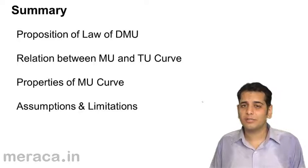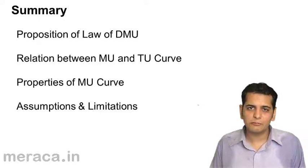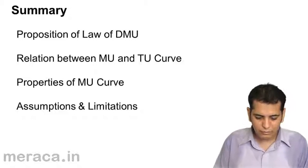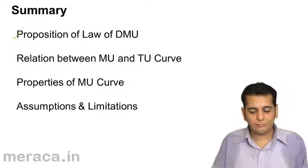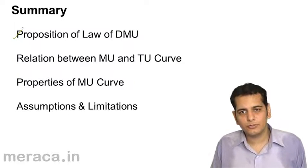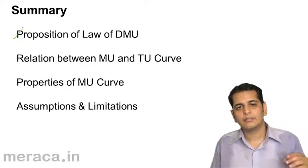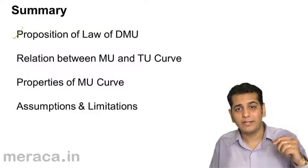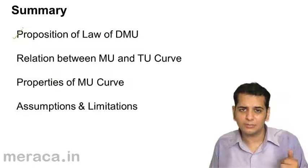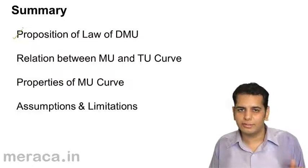Just summarize what we've done in the law of diminishing marginal utility. We have done the proposition of the law. The law states that the additional utility that you derive from an additional consumption will always go on decreasing.